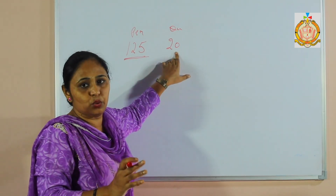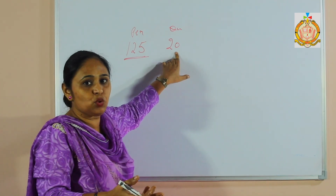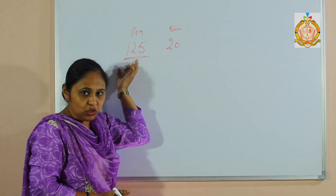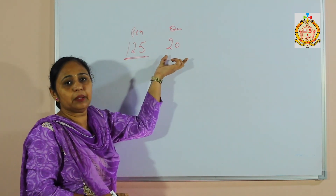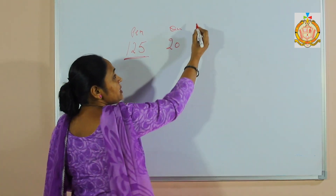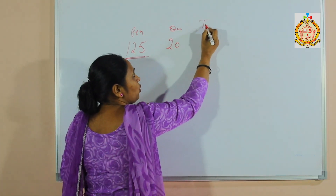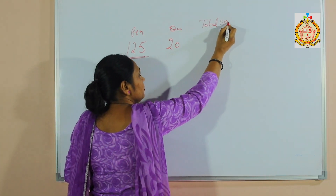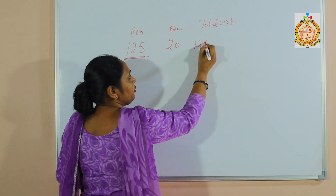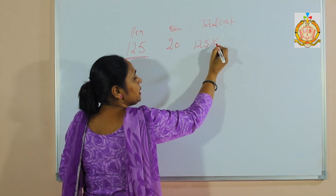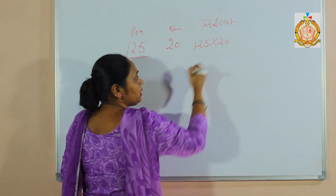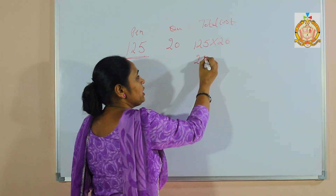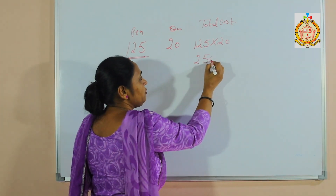Now, what is the total cost I have to pay? I have to multiply: one unit cost multiplied by quantity. That means total cost = 125 × 20 = 2500.